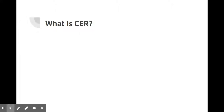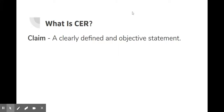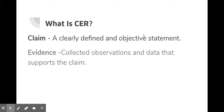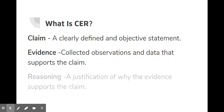First, let's break down this acronym. C stands for Claim — a claim is a clearly defined and objective statement. E stands for Evidence — these are a series of collected observations and bits of data that support the claim. R stands for Reasoning — this is a justification of why the evidence supports the claim.